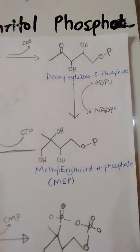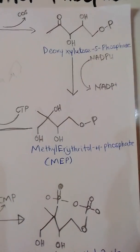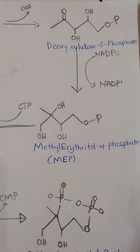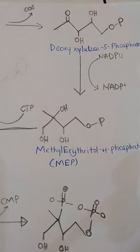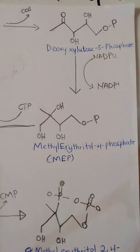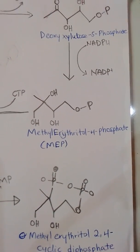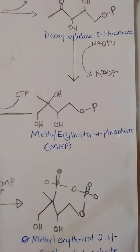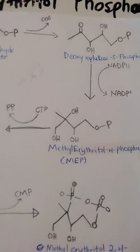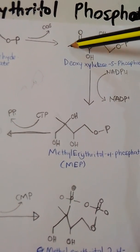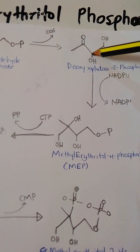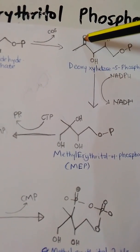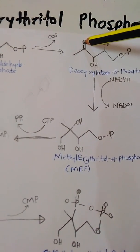The deoxyxylulose 5-phosphate undergoes an intramolecular rearrangement followed by a reduction reaction to produce MEP, which is methylerythritol 4-phosphate. In this step there is a shift of the methyl group to the adjacent carbon, followed by reduction of that carbon to a hydroxy group.